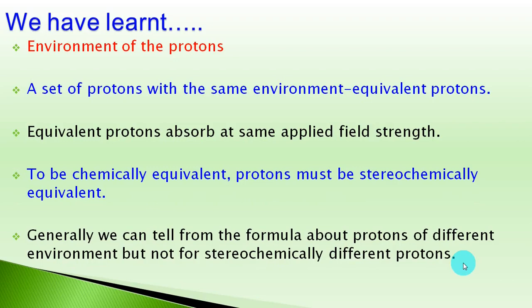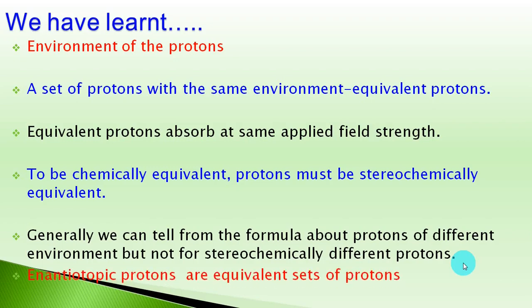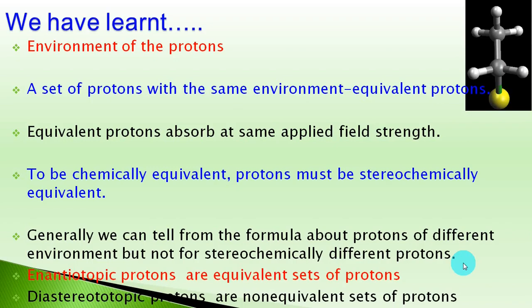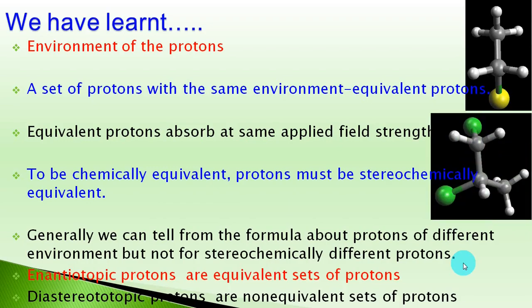For protons to be chemically equivalent, they must also be stereochemically equivalent. Enantiotopic protons, which give enantiomers upon substitution, are equivalent sets of protons and give the same NMR signal. Diastereotopic protons, which give diastereomers upon substitution, are non-equivalent sets of protons and give different NMR signals. The number of NMR signals given by an organic compound equals the number of equivalent sets of protons present in it.